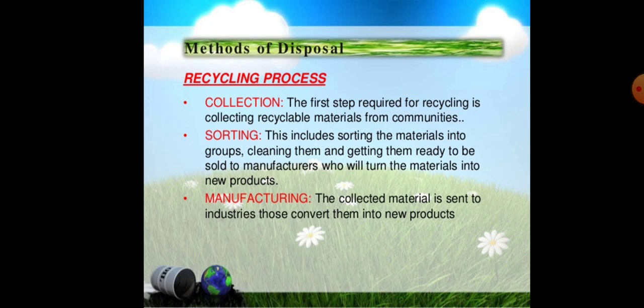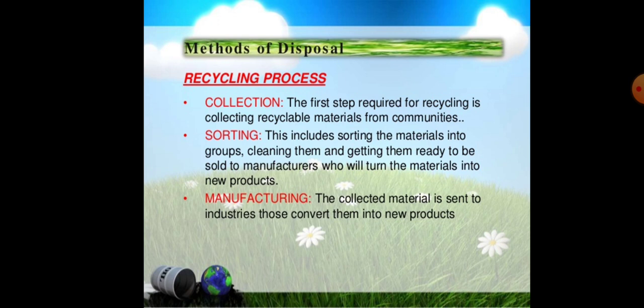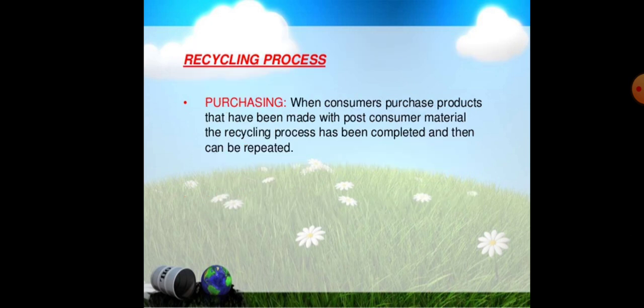The recycling process involves collection, sorting, manufacturing, and then purchasing. When consumers purchase products that have been made with post-consumer materials, the recycling process has been completed and can then be repeated. So in the recycling process, we first do collection, then sorting, then manufacturing to create new products, and finally purchasing.